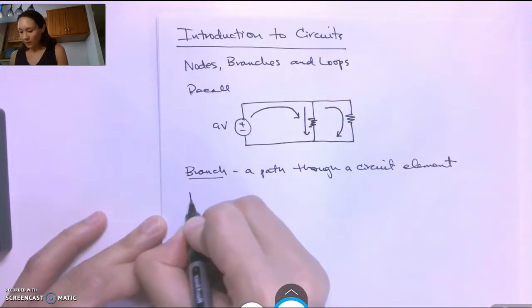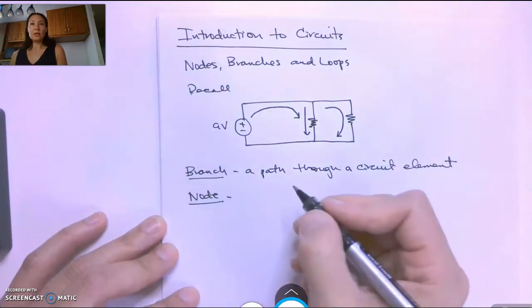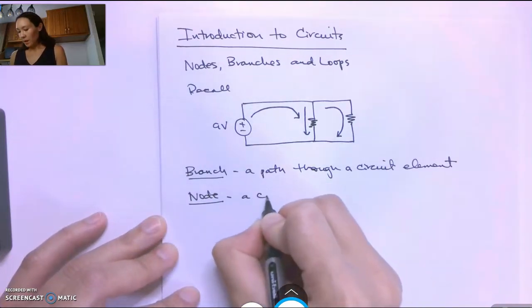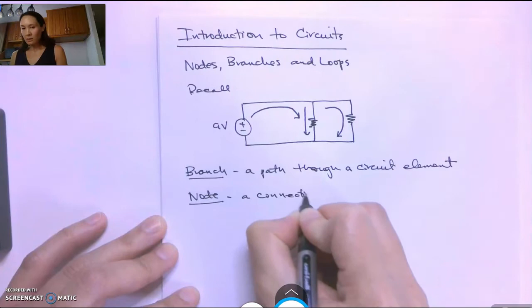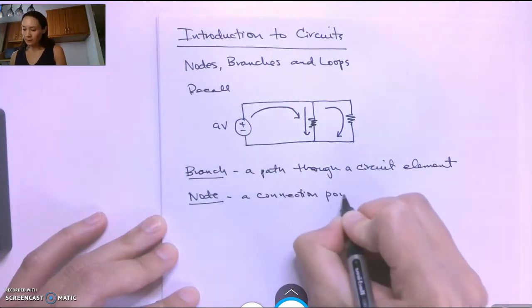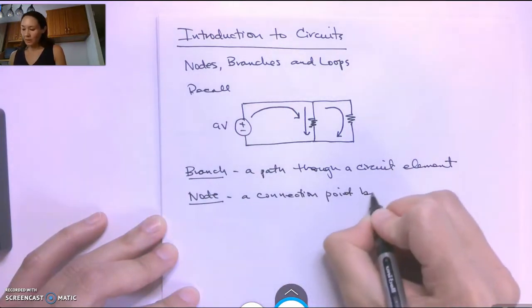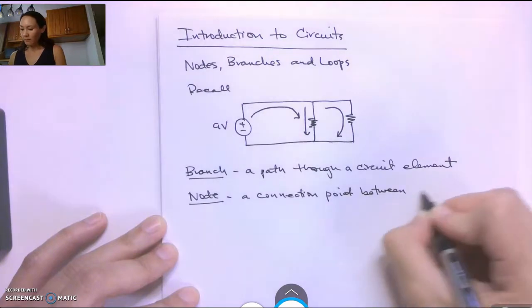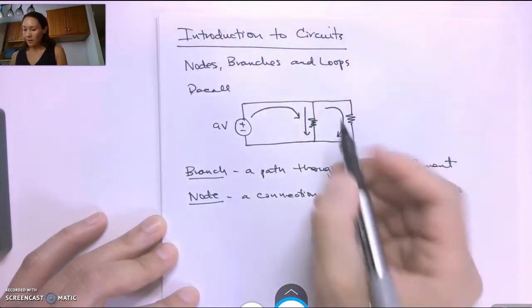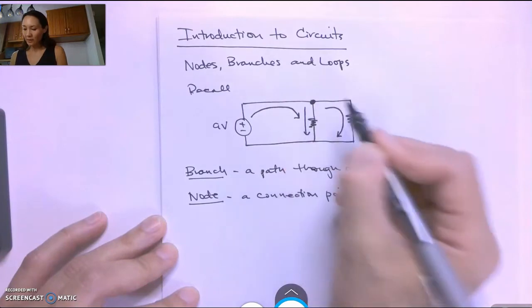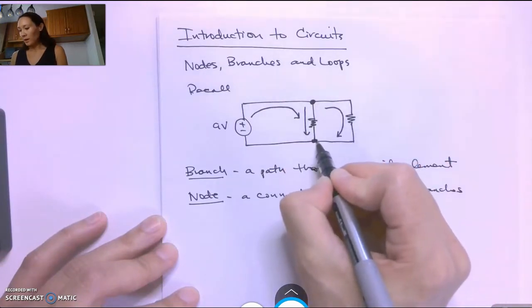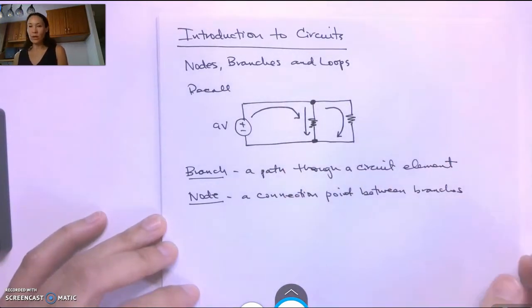And the second term I'm going to define for you is a node. The definition of the node is a connection point between branches. Okay so we have a node right here and we have a node right here and that separates these two branches.